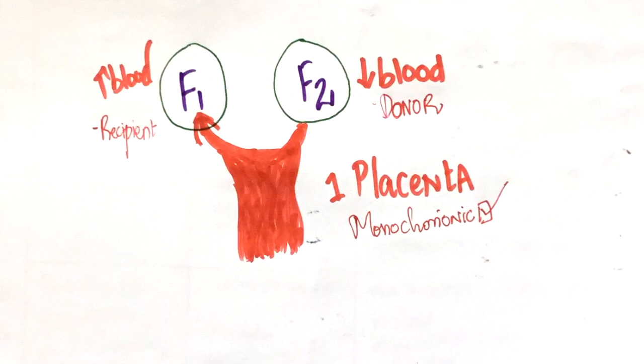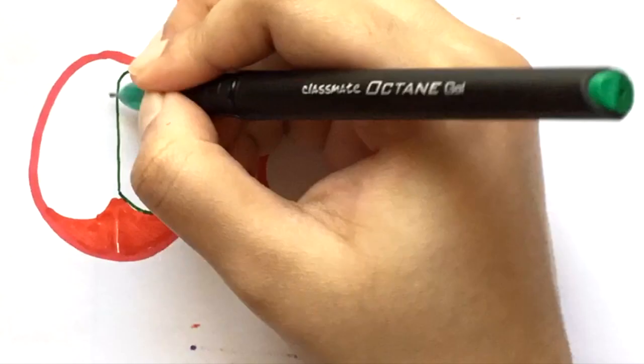Having understood that, let's take a look at the T and lambda signs. In dichorionic pregnancies, there are two separate placentas. So, this whole part looks like a lambda.